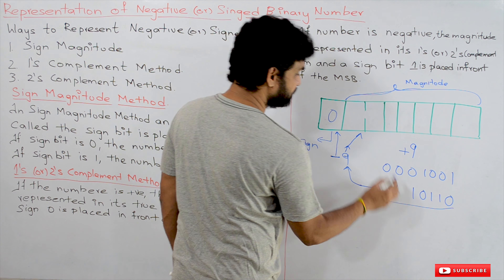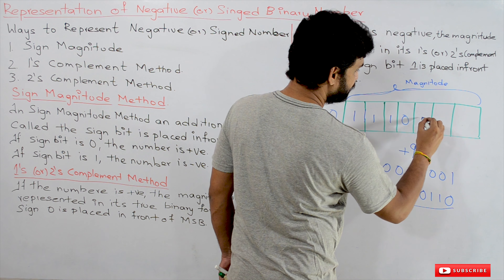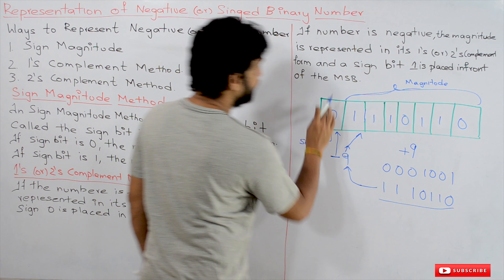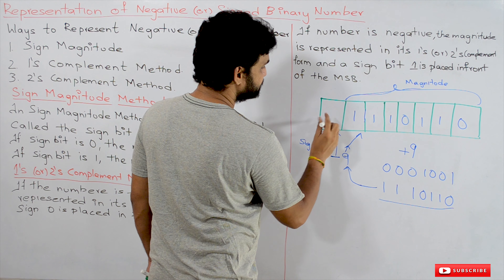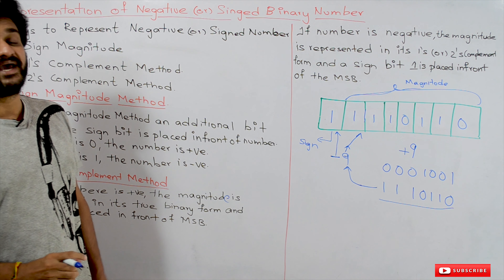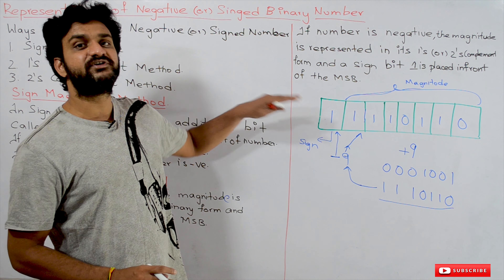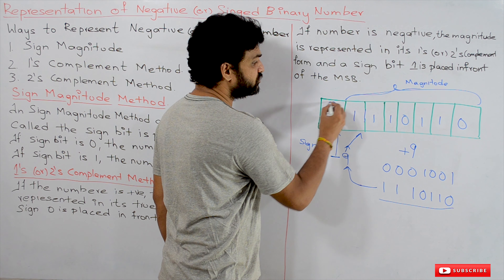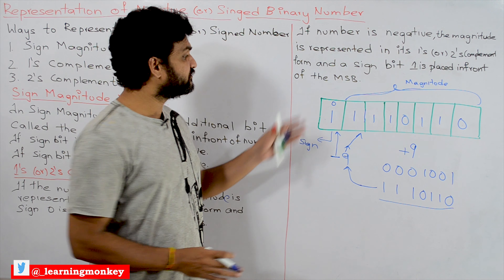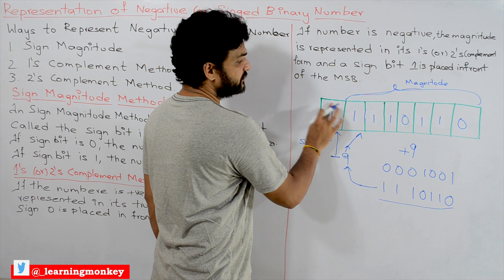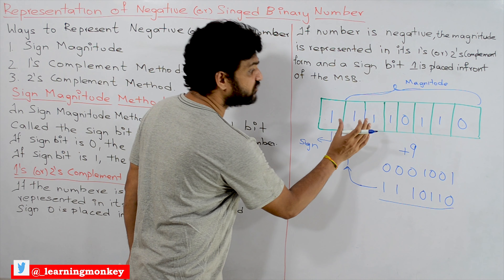The negative number representation of 9 in one's complement is 1110110, and a sign bit of 1 is placed in front of the MSB. What this means is: just find the one's complement of each and every bit. The sign bit is initially 0 for positive; if it is a negative number, finding the one's complement of all bits — including the sign bit — will make the sign bit 1.